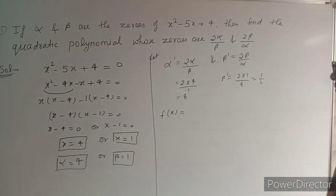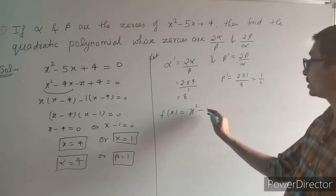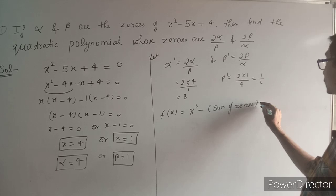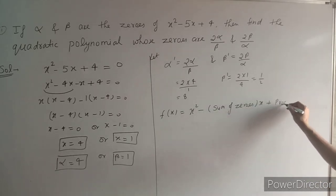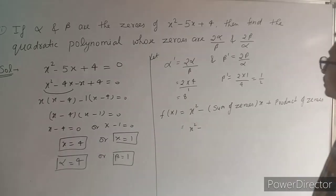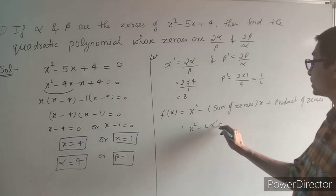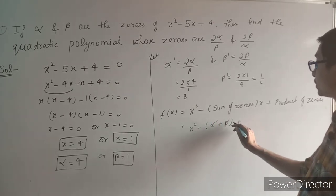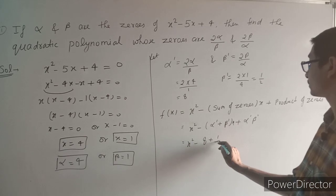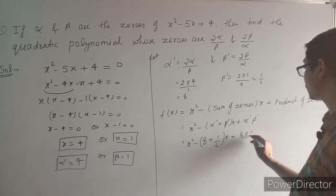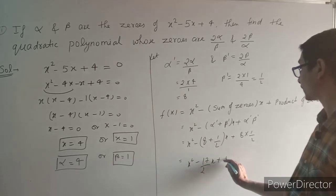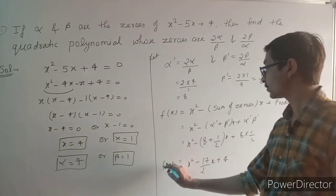Now we know that any quadratic polynomial is of the form: x² - (sum of zeros)·x + (product of zeros). So here we get: x² - (α' + β')·x + α'·β' = x² - (8 + 1/2)·x + (8 × 1/2) = x² - (17/2)·x + 4, which is the required quadratic polynomial.